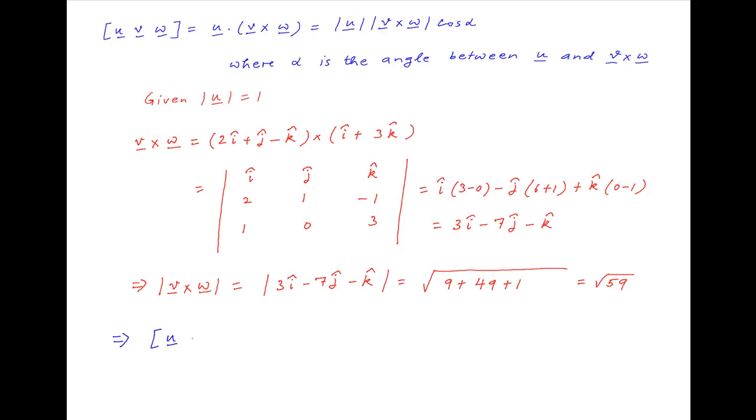Substituting the above values, the scalar triple product u is equal to root 59 times cos alpha. Now, the right-hand side is maximized when cos alpha is equal to 1.